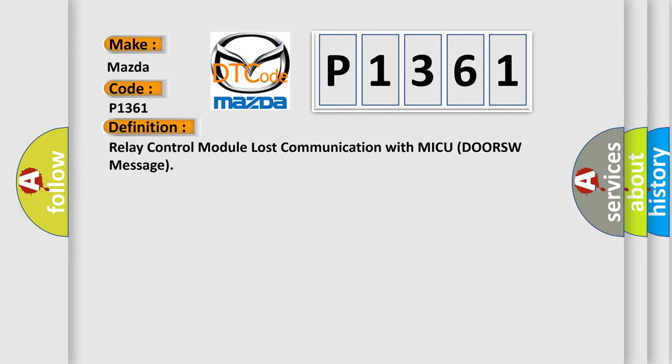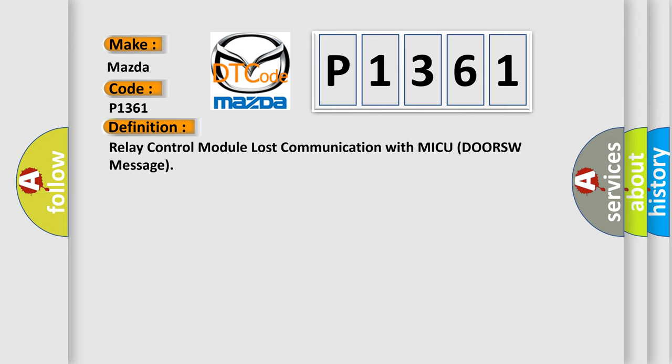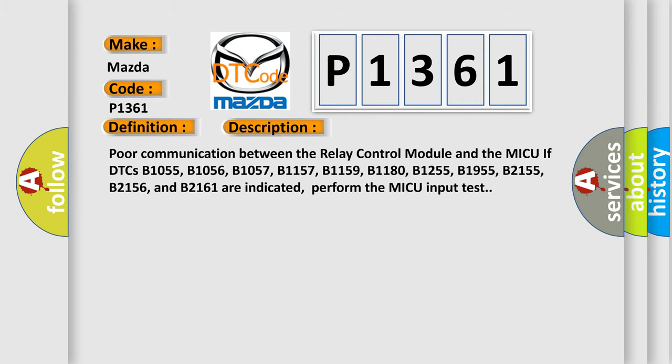Here is a short description of this DTC code: poor communication between the relay control module and the MICU. If DTCs B1055, B1056, B1057, B1157, B1159, B1180, B1255, B1955, B2155, B2156, and B2161 are indicated, perform the MICU input test.